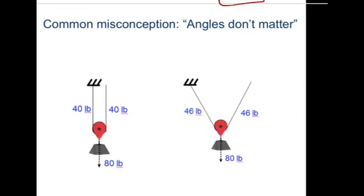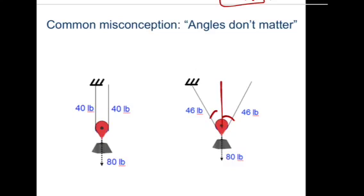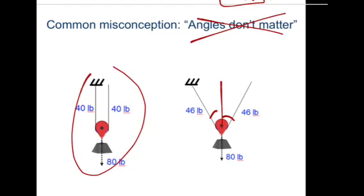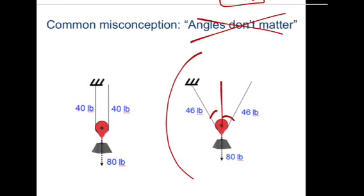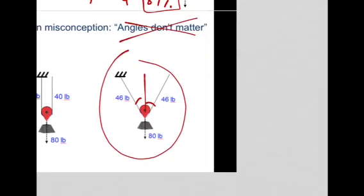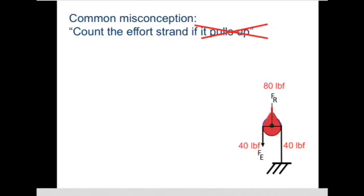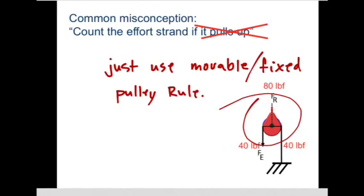A common misconception is that angles don't matter. If you're pulling at an angle, you'd have to use trigonometry to figure out the force components — angles do matter. Another misconception: count the effort strand if it pulls up. Rather than worrying about that, just remember: if a pulley is movable, the IMA is 2. If you're confused about counting strands with multiple movable pulleys, just use the movable/fixed pulley rule and multiply.